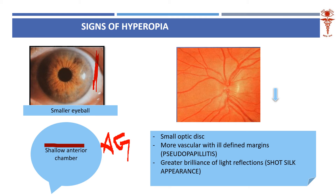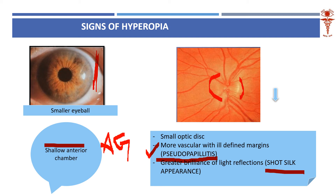If you look at the fundus of these persons, the disc margin shows blurring. In a normal person the disc margin is crisp and distinct, but here the temporal margin is totally fuzzy — this is called pseudopapilledema. The disc is crowded and very small. Additionally, the retina looks like a silk cloth, shining brightly — this characteristic 'shot-silk retina' appearance is typical of a hyperopic eye.